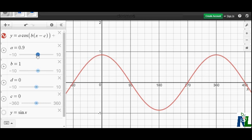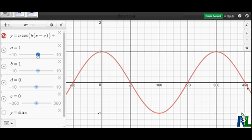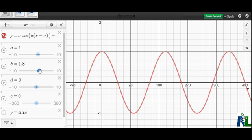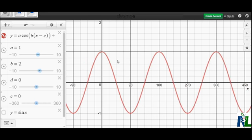Next, let's look at the value of b. The value of b is located inside the bracket with x minus c for the cosine function and also for the sine function. What we'll notice is, as we vary b, we're changing how quickly things happen on the graph here.